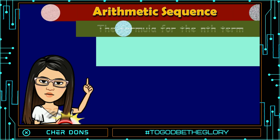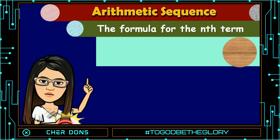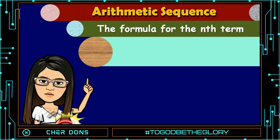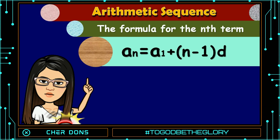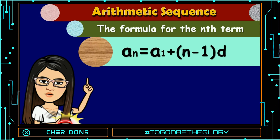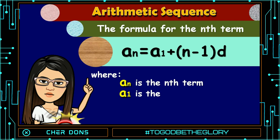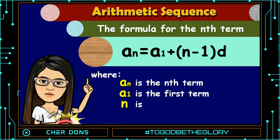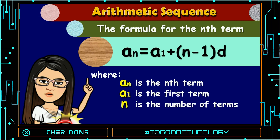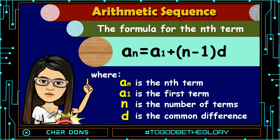The formula for the nth term of an arithmetic sequence is: a sub n equals a sub 1 plus quantity n minus 1 multiplied by d. Where a sub n is the nth term, a sub 1 is the first term, n is the number of terms, and d is the common difference.